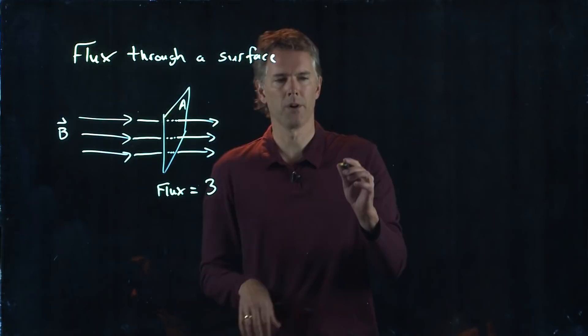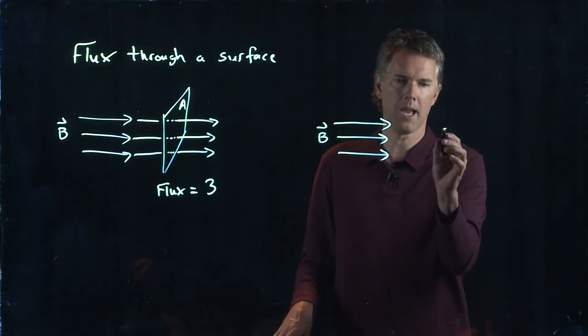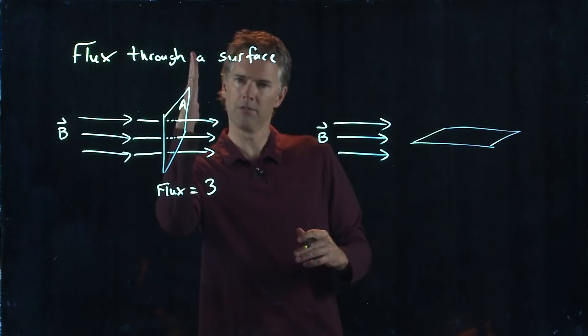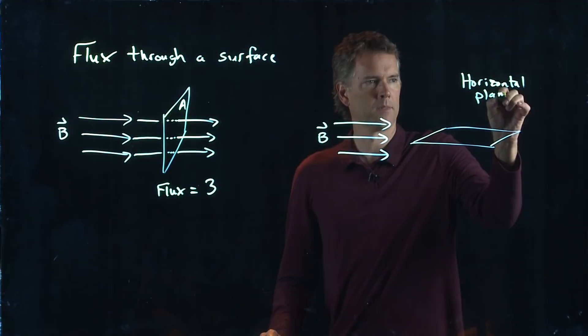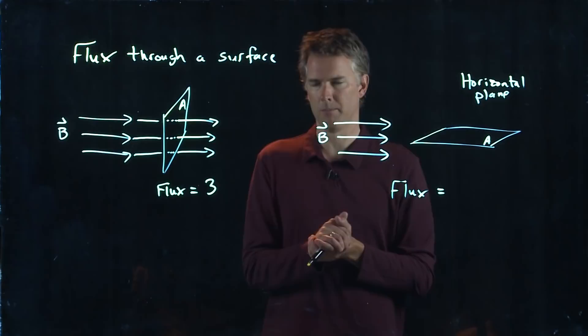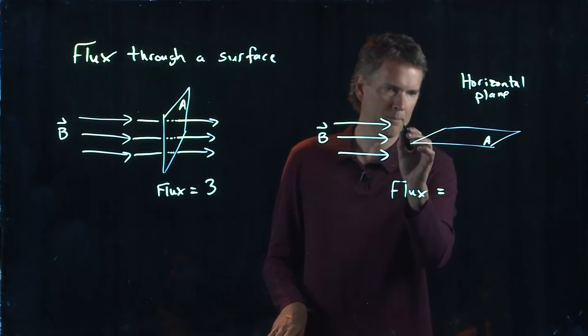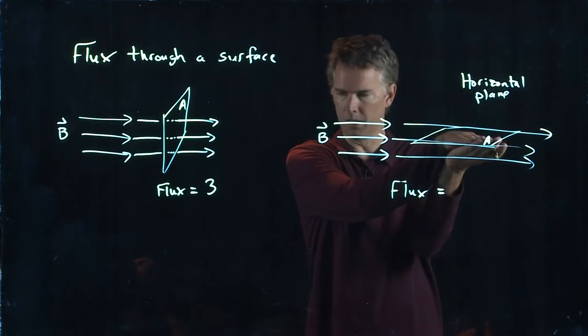Now let's take the same lines of B pointing to the right, but tip the area sideways — it's now a horizontal plane, still area A. What is the flux in this case? Zero. The top line skims right on past, the middle line skims right on past, the bottom line skims right on past. None of them actually go through this infinitely thin surface, so the flux is zero.